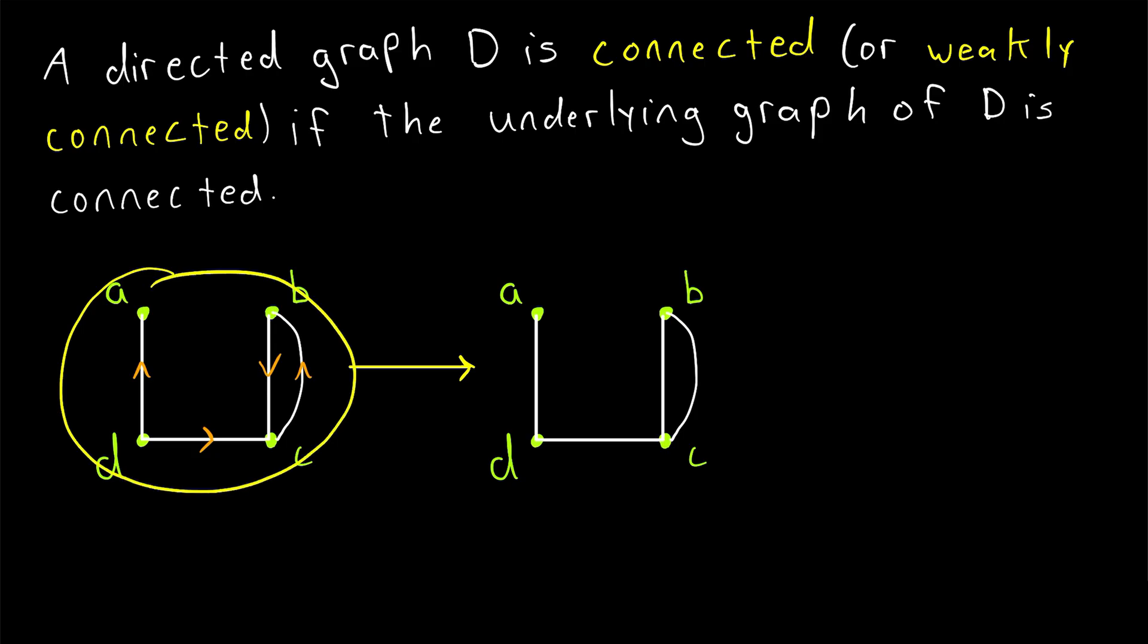So in this case, the underlying graph of this directed graph is seen here. We may choose to allow for multiple edges in the underlying graph, or we may combine them into one edge, so we're only looking at simple graphs. But whatever we choose to do with the multiple edges for underlying graphs, it will not affect whether or not a directed graph is weakly connected.